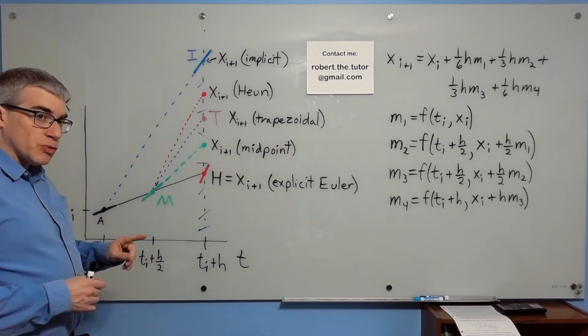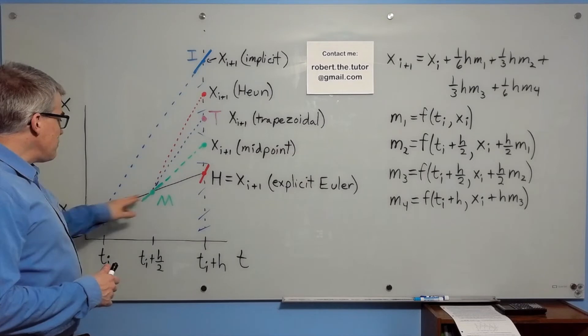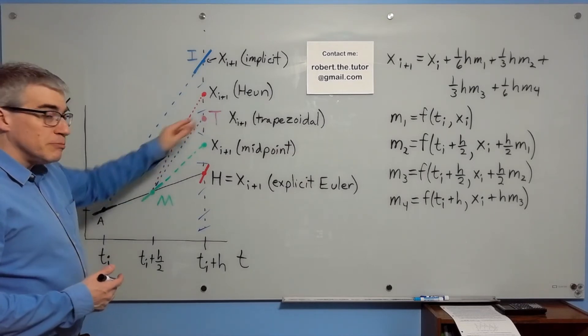Next up, trapezoidal rule. We go halfway explicit, and then the other half with the implicit slope.